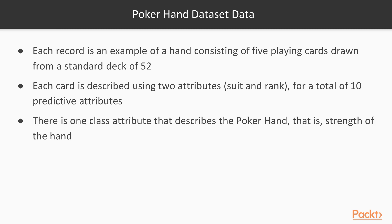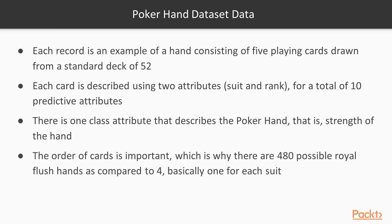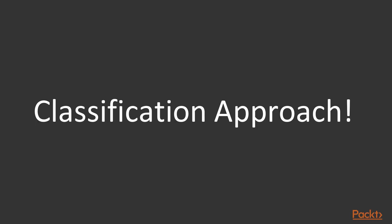There is one additional class attribute that describes the poker hand, meaning it describes the strength of the hand. Because of the rules of poker, the order of the cards is important as well — there are 640 possible royal flush hands as compared to four, since we can have a royal flush only one for each suit. As mentioned previously, this is a classification problem and we are going to use clustering to try to solve it and to analyze the data.